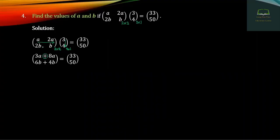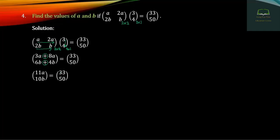So the first row is BWB, second row is BWB, and BWB is 6B, and BWB is 4B, and the division is 0.1. The first row is 11A and 10B. This is 3350.